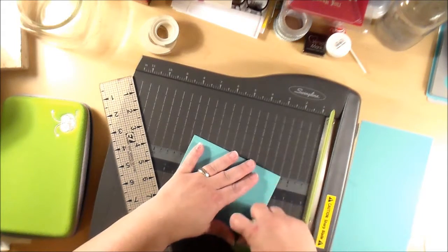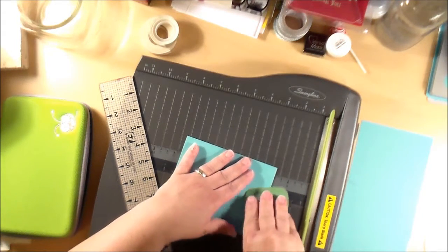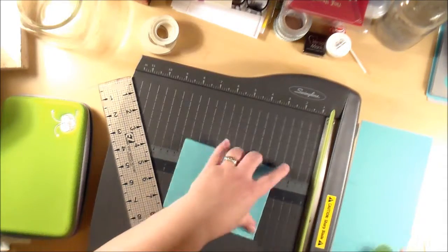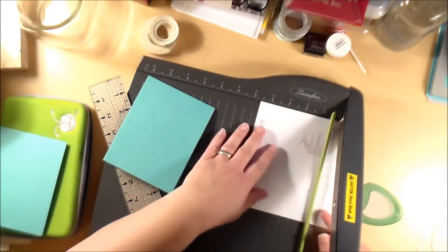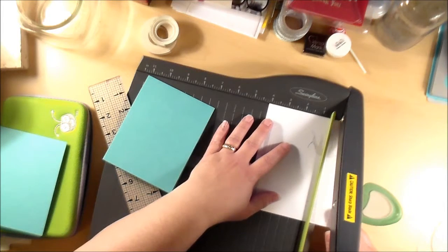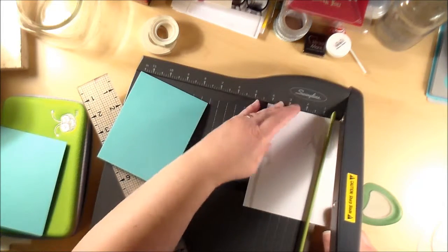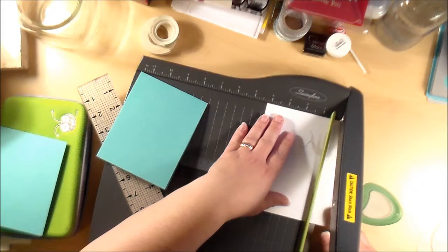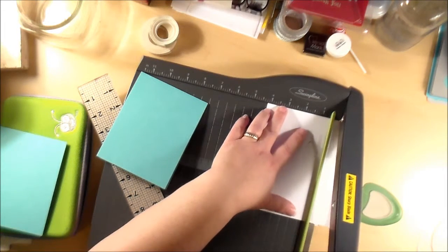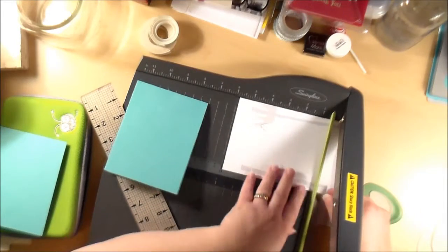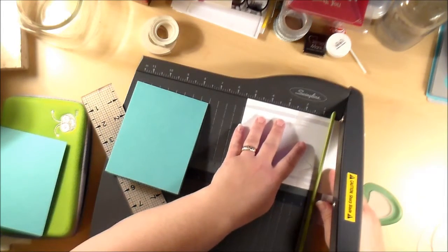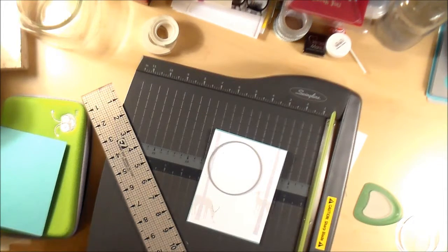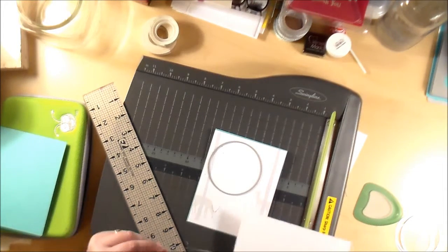I gave it a nice good crisp crease with my burnishing tool, and then I cut the decorative paper that I was using for the front of the card to match the size of the card base. I was really careful because I wanted to make sure to have the scene with both deer in view on the front of the card.